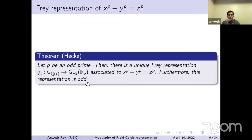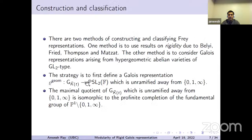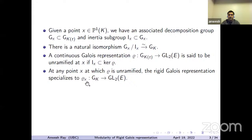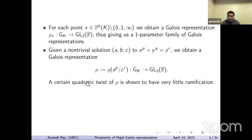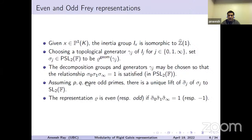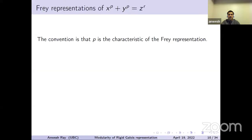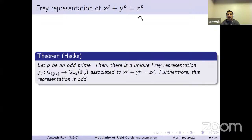Furthermore, this representation is odd in the sense that when we take the lifts sigma_0-tilde, sigma_1-tilde, sigma_infinity-tilde of the sigma_j to SL_2(F), their product is equal to −1. So that is the unique Frey representation associated to the classical Fermat equation.